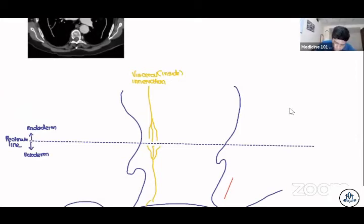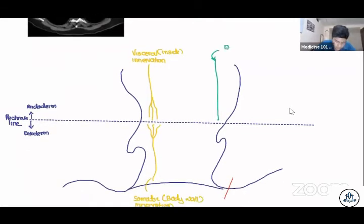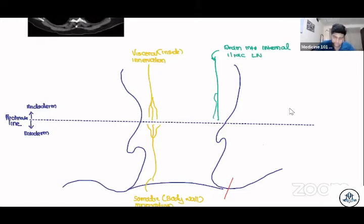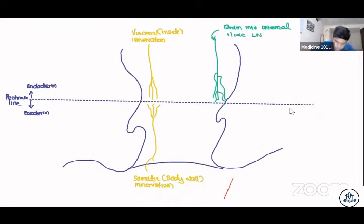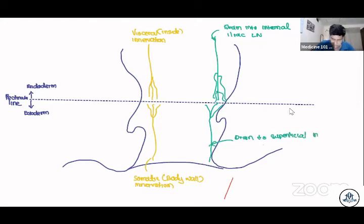Now that you have some idea about somatic and visceral innervation, let's go into the lymph nodes. Above the pectinate line, these drain into the internal iliac lymph nodes.